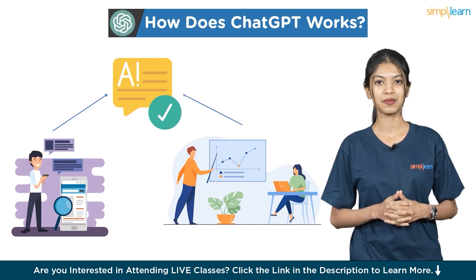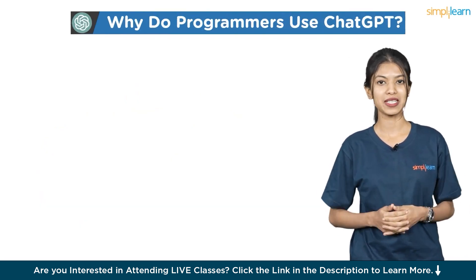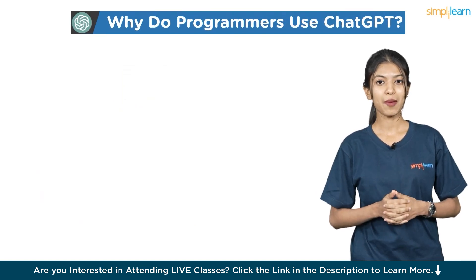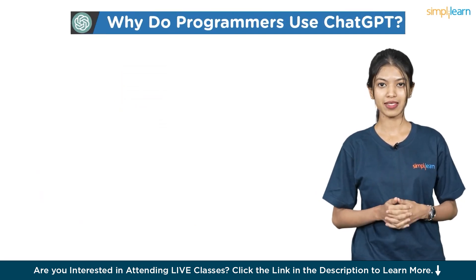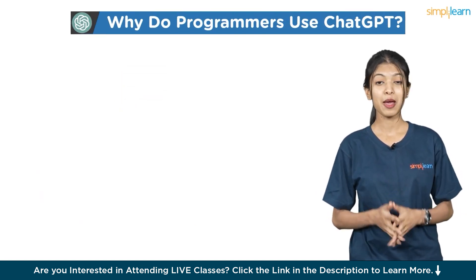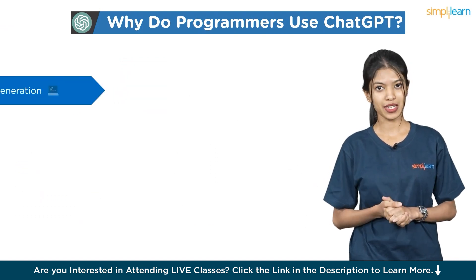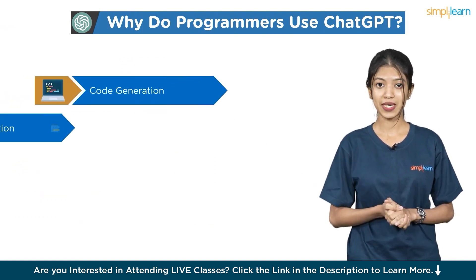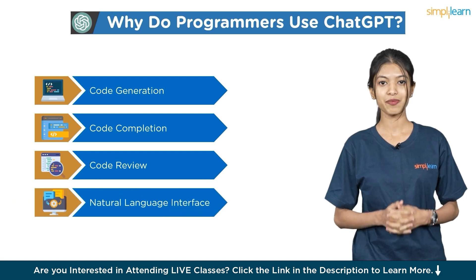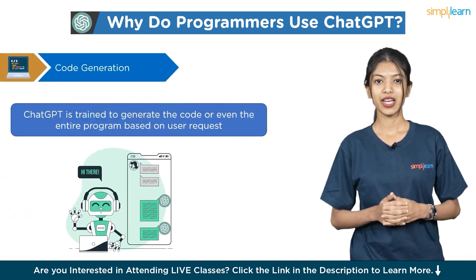But why do programmers use ChatGPT on a regular basis? ChatGPT assists programmers by offering programming-related answers and solutions and helping them improve their skills. Besides that, ChatGPT is utilized for code generation, code completion, code review, and as a natural language interface. Let us understand each in detail.